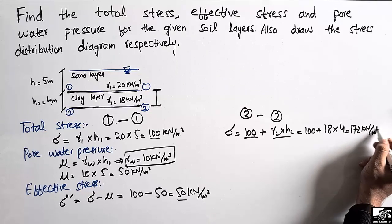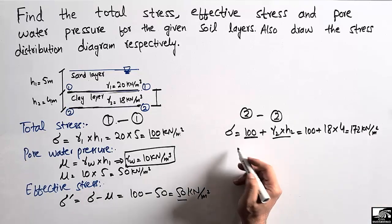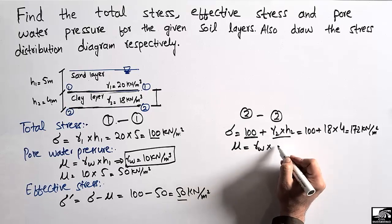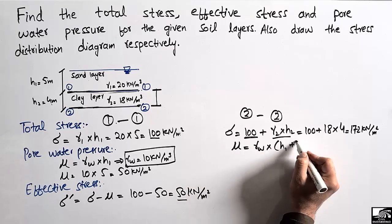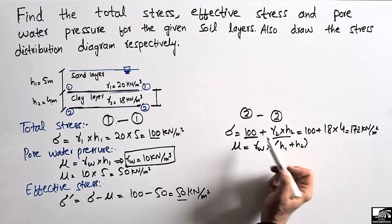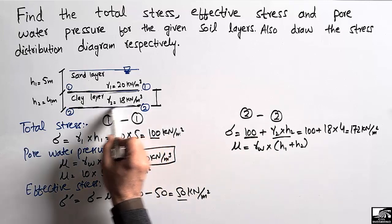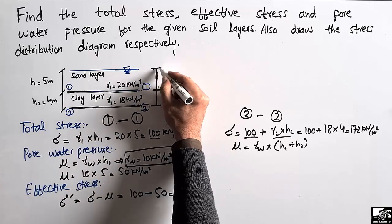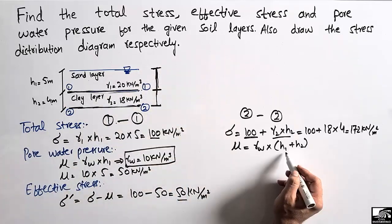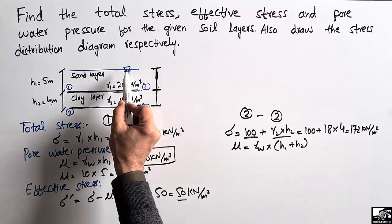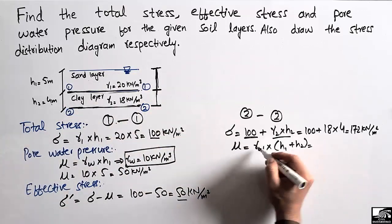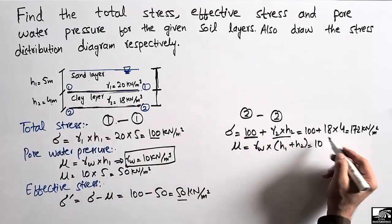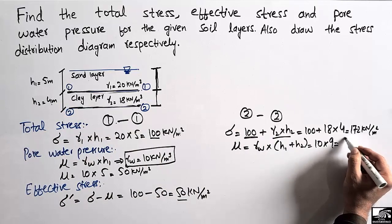The pore water pressure at section 2-2 equals gamma w multiplied by the total height h1 plus h2, measured from the water table at the top down to the bottom. So mu equals 10 multiplied by (5 plus 4), which is 10 multiplied by 9, giving 90 kN per square meter.